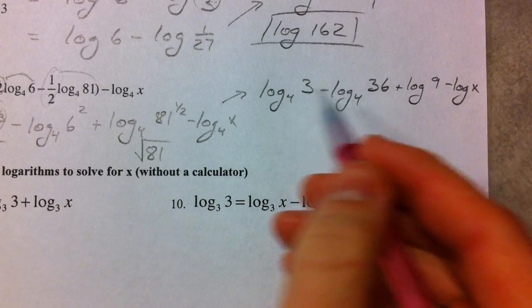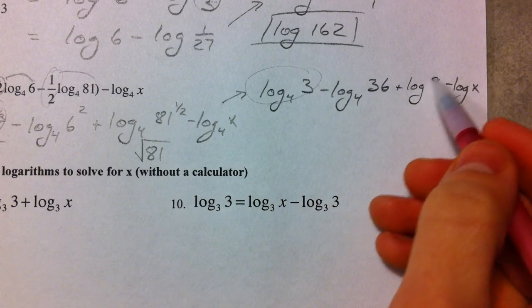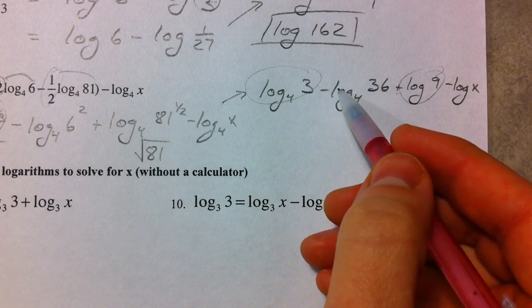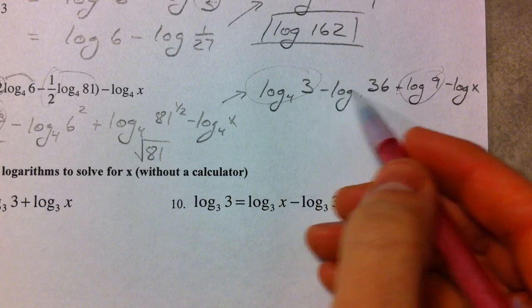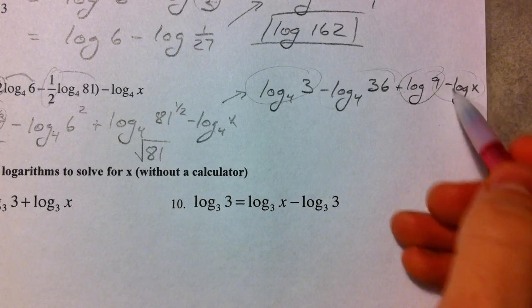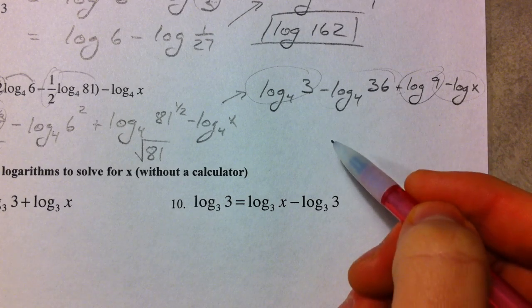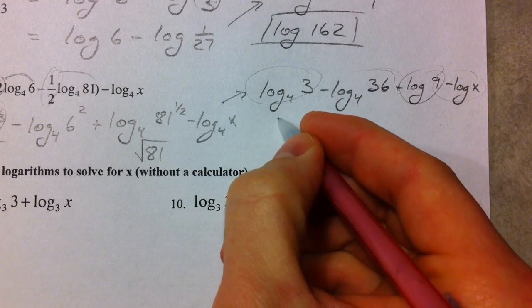So what you have to realize is that these positive ones, log base 3 and log base 9, are going to go up top because they're going to be multiplied. And then the minus ones, because they're being subtracted, are going to be divided by.